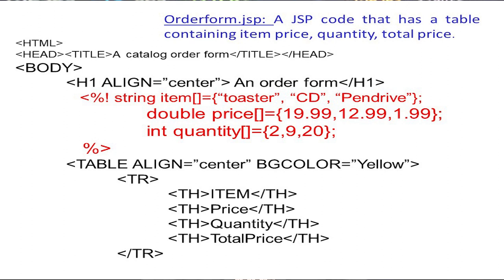So 2 represents buying 2 Toasters, 9 represents 9 CDs, and 20 represents 20 Pen Drives. These values are pre-stored in the arrays, but we can also retrieve this data directly from a database.